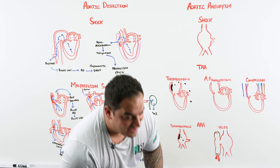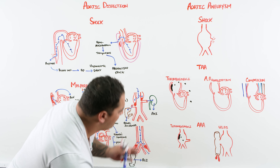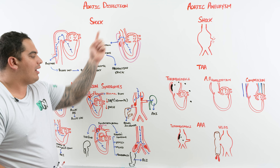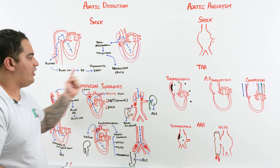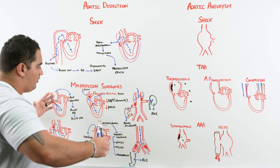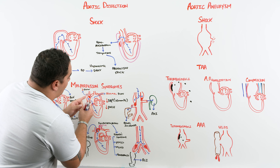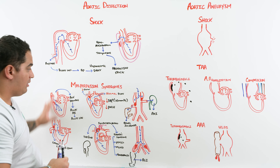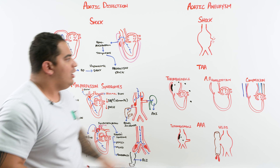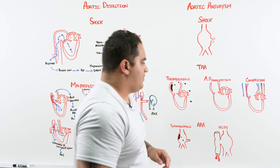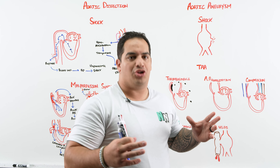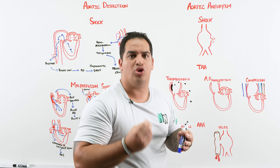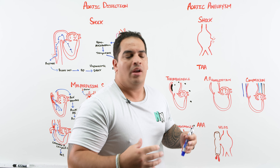To summarize aortic dissection: the classic finding is ripping, tearing chest pain. The most terrifying complication is shock. On your boards, watch for malperfusion syndromes — the dissection creates a false lumen that narrows or knocks out blood vessels branching off the aorta, causing the complications we've discussed throughout.